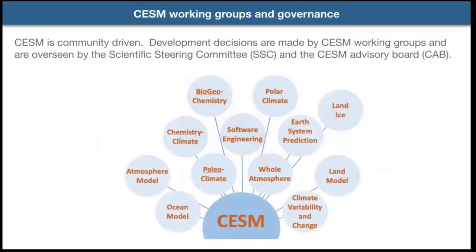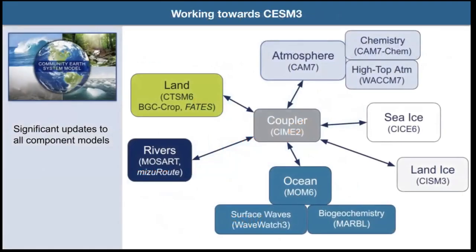CESM is pretty community driven. We have a number of working groups geared towards developing individual components, and others such as the Climate Variability and Change Working Group and the Earth System Prediction Working Group that are more about running simulations and producing large datasets for the broader research community. Decisions about developing individual components are made by the working groups — consisting of both internal and external NCAR people — and guided by the Scientific Steering Committee and the CESM Advisory Board, which consist of external advisors.